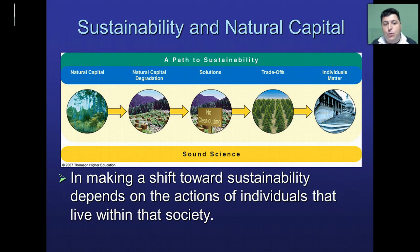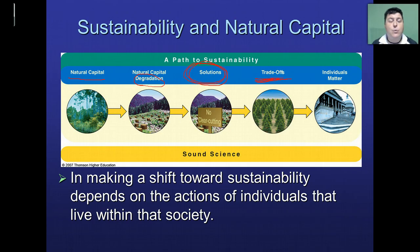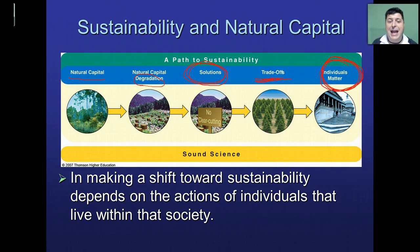As we shift towards sustainability, it's going to depend upon individual choices. We know that we consume natural capital and as a result it gets degraded, so we have to come up with solutions. Each solution will have some kind of trade-off, and we have to decide what produces the maximum benefit and minimal harm. Each person making those choices is going to make a difference. Over the course of this class, we're going to look at our environmental worldview and think about ways we can live more sustainably and make good choices to make a difference on our planet.